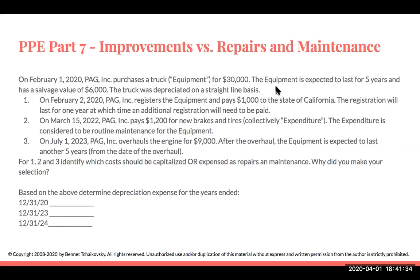For number two, paying $1,200 for new brakes and tires: the expenditure is considered routine maintenance for the equipment. Because it's routine, it's not making the asset any better. Therefore, we expense that amount as repairs and maintenance.